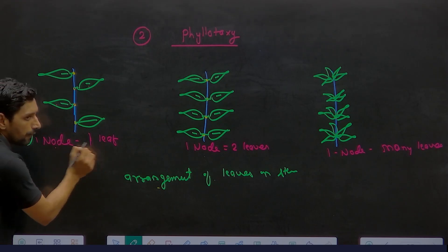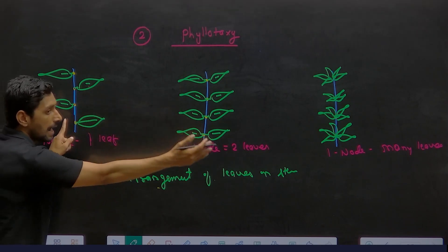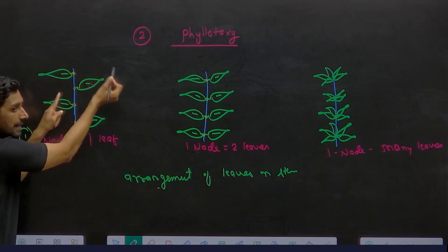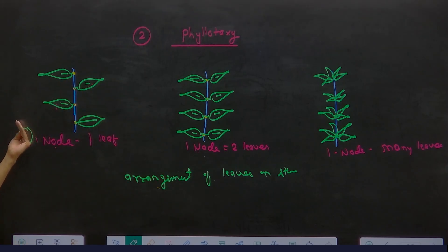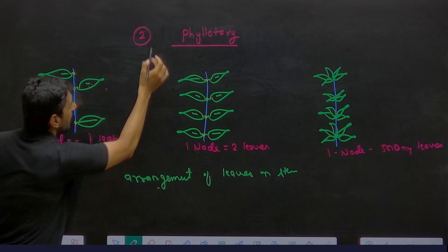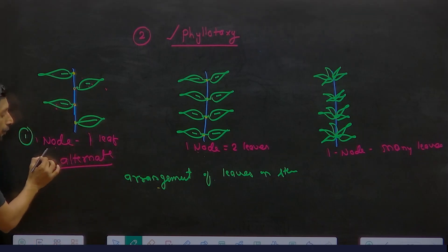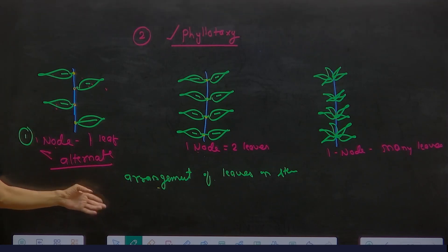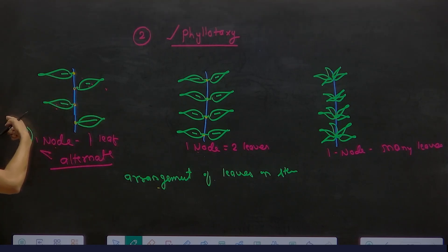Now look at this — one node, one leaf; one node, two leaves. Now you just have to observe the leaf arrangement here. See, this is one node, and leaf has come on our right side and one leaf on the left side. Right, left, right, left — it goes on like this. One node gives rise to only one leaf, but one leaf is on the right side of the stem and the other on the left side. Again right side, again left side — this is called as alternate phyllotaxy. What is alternate phyllotaxy? One leaf arises from one node but the arrangement is alternate — right side of stem one leaf, second node left side of the stem. Is that clear?